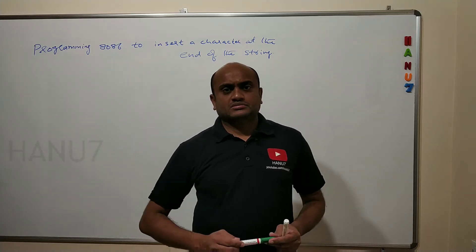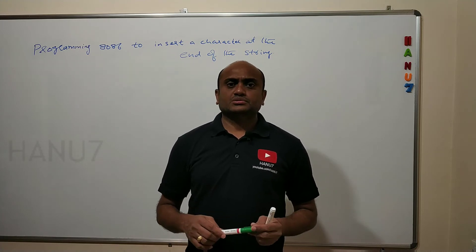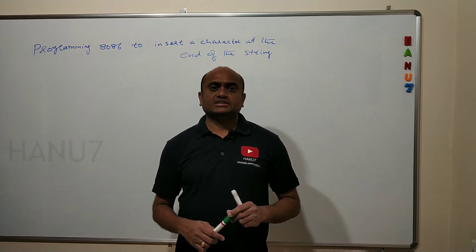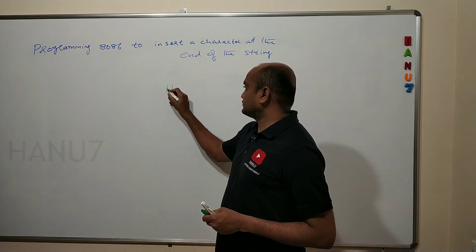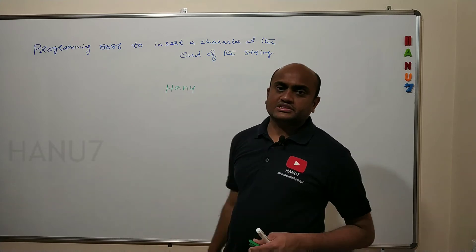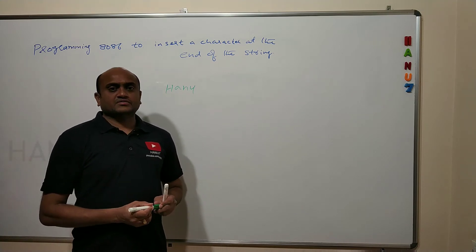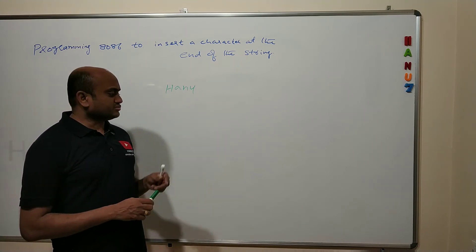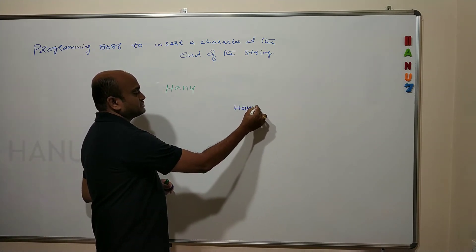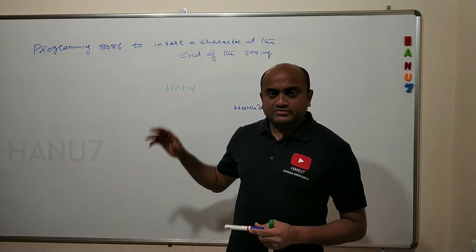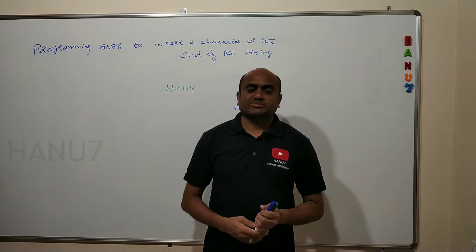Welcome to this video. Here we will see how to program an 8086 microprocessor to insert a character at the end of a string. I have the string HANU, and I want to insert a new character at the end. The desired output I am expecting is HANU7 — so this '7' I want to insert at the end of the string.